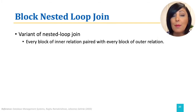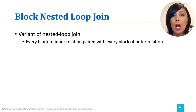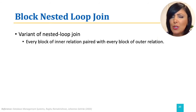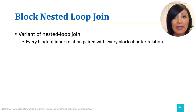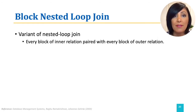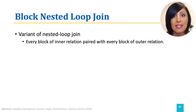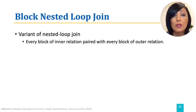The main cost we are trying to avoid in the overall join operation is the IO cost. Let's start explaining the idea with a simple example. What if the outer relation in the nested loop, which is R, is small enough to fit into the memory?